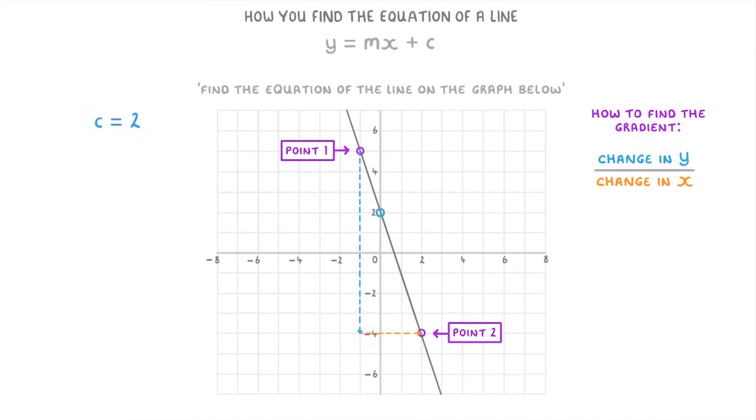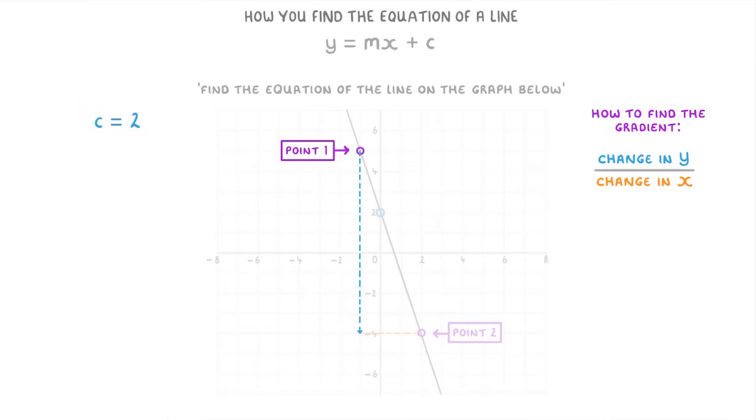So that we can form a right angled triangle. Then to find our change in y, we can see that the vertical arrow goes from positive 5 all the way down to negative 4, which is a change of minus 9.